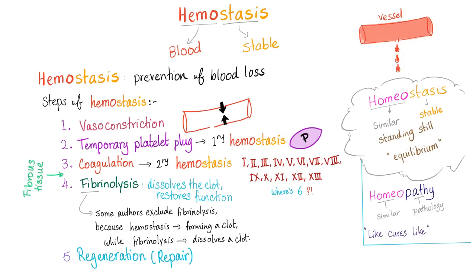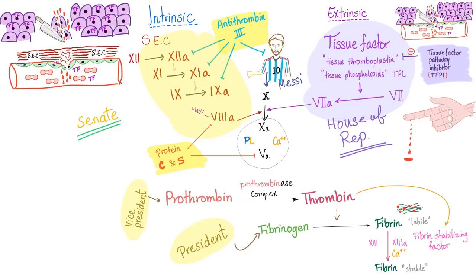Hemostasis has many steps: vasoconstriction, temporary platelet plug, coagulation, fibrinolysis and regeneration. We've talked about the first four and now we'll talk about protein C and S — how to inhibit step number 3. Before we inhibit step number 3, let's first talk about step number 3, which is secondary hemostasis, also known as clot formation or thrombus formation.